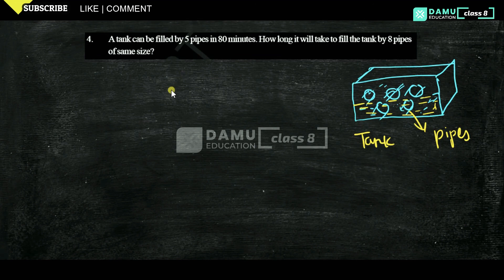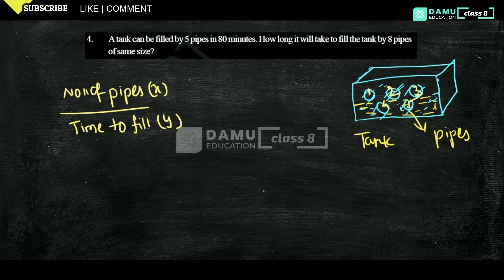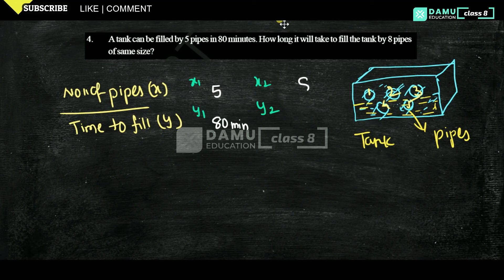In this fourth question: a tank can be filled by 5 pipes in 80 minutes. How long will it take to fill the tank with 8 pipes of the same size? Let number of pipes be x and time to fill be y (in minutes). We have x1, y1 and x2, y2. x1 is 5 pipes, y1 is 80 minutes, and x2 is 8 pipes. We need to find y2.